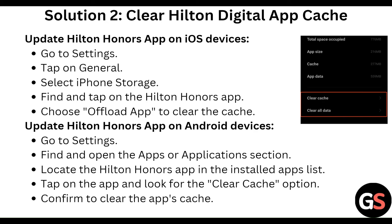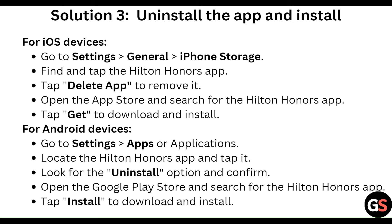To clear the cache on Android, go to Settings and find the Apps or Applications section. Locate the Hilton Honors app in the installed apps list, tap on it, and look for the Clear Cache option. Confirm to clear the cache.